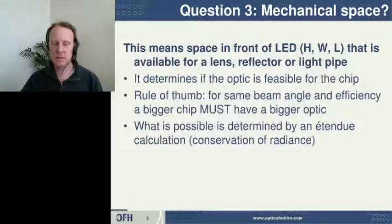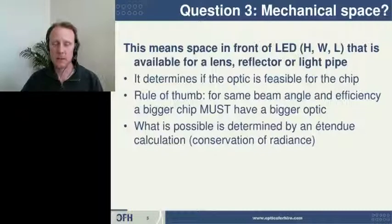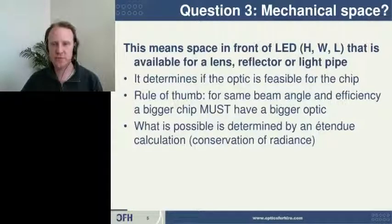The third detail is the mechanical space available. This is very important because sometimes you are space limited, and the space available doesn't allow you to achieve the beam pattern that you want with the chip that you've selected. As a rule of thumb, when you get a bigger chip, you need a bigger optic. Another rule of thumb: as you get a smaller beam angle, you need a bigger optic, and as you get a bigger beam angle, you need a smaller optic. So the mechanical space available may or may not constrain you. An optical engineer can help you figure out what is feasible in the mechanical space you have available by doing some basic calculations called the étendue calculations.